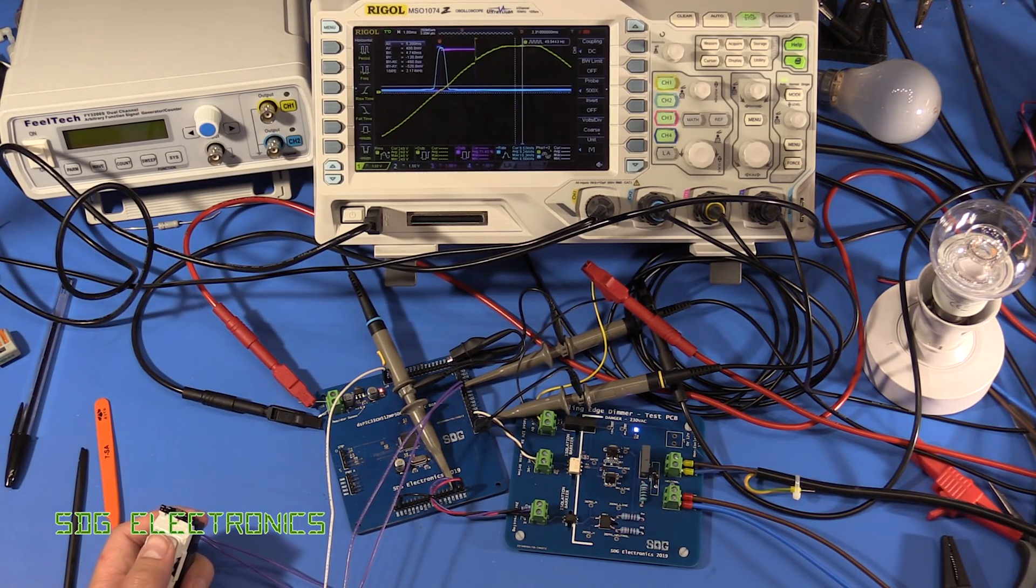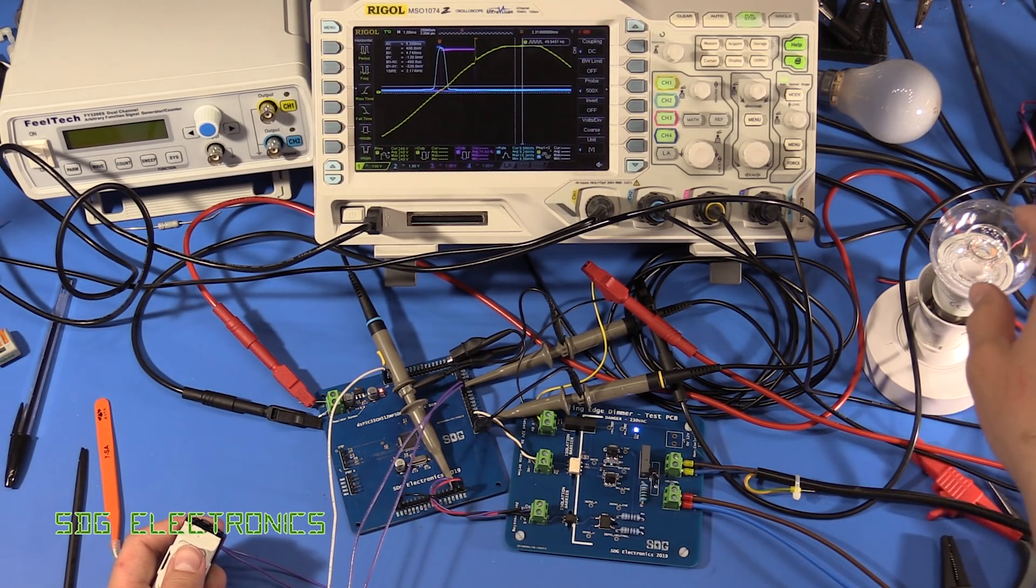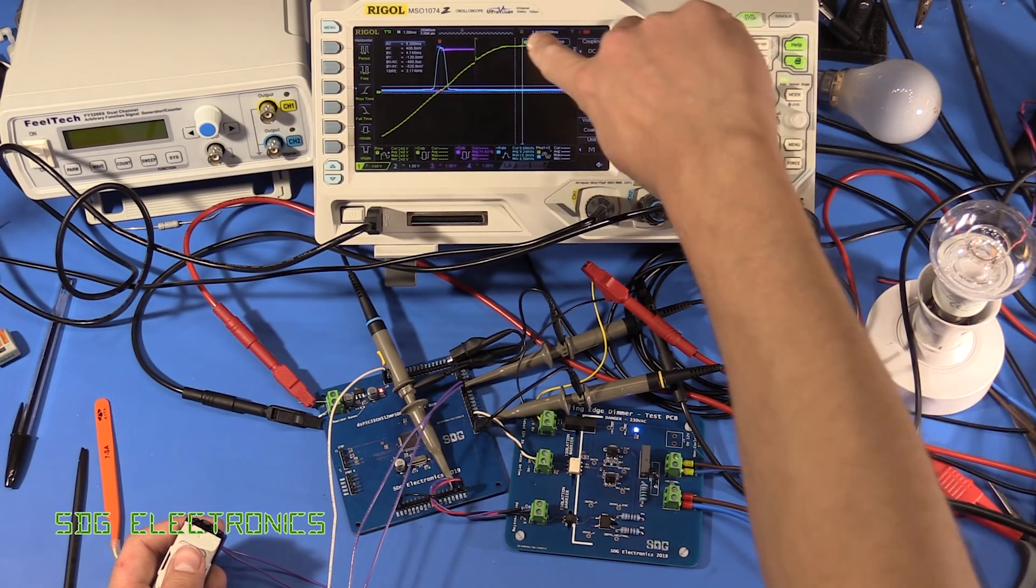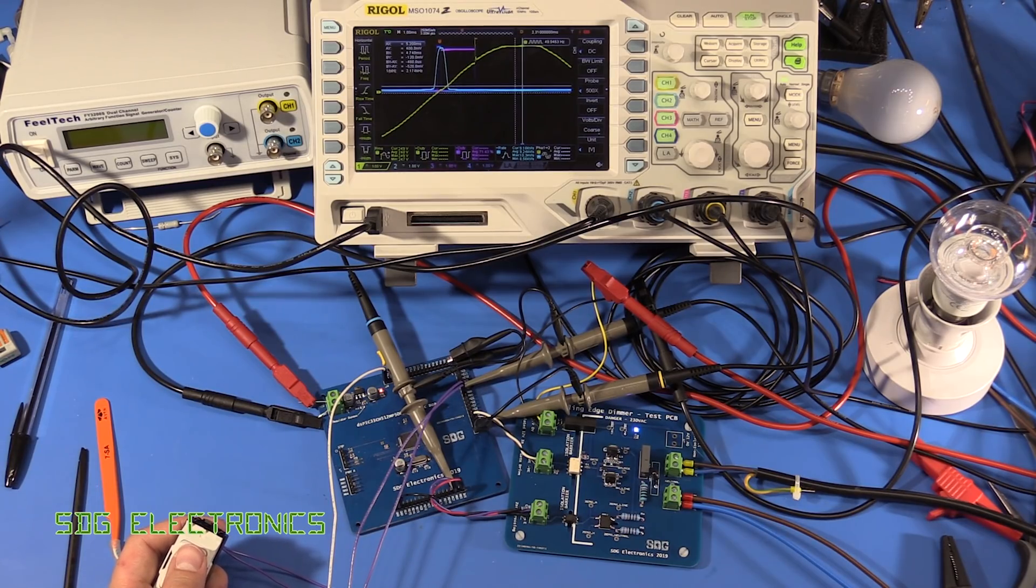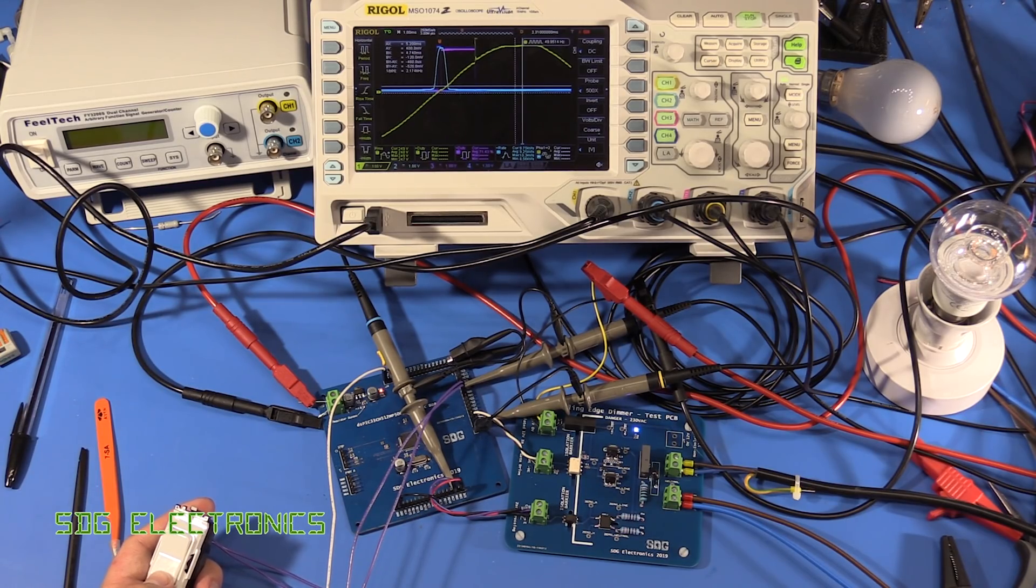and we are running from the isolation transformer and even with the just the single lamp you see this weird glitch in the AC waveform and I'm wondering if actually it's just the isolation transformer causing a bit of grief so I will just try plugging this directly into the mains and see if that still occurs